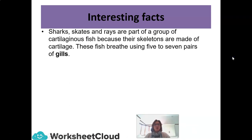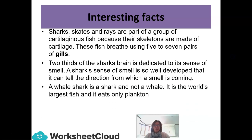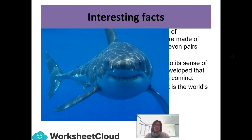Some interesting facts: sharks, skates, and rays are cartilaginous fish because their skeletons are made of cartilage. These fish breathe using five to seven pairs of gills. Two-thirds of a shark's brain is dedicated to its sense of smell — so well-developed that it can tell the direction from which a smell is coming. A whale shark is a shark, not a whale. It is the world's largest fish, and it only eats plankton.